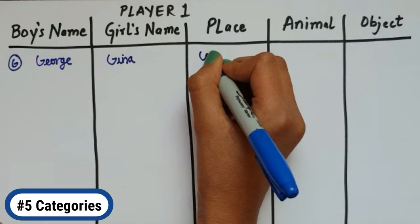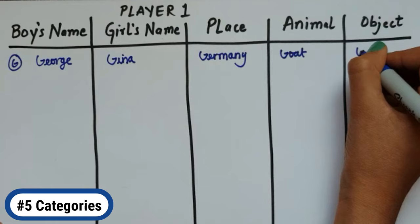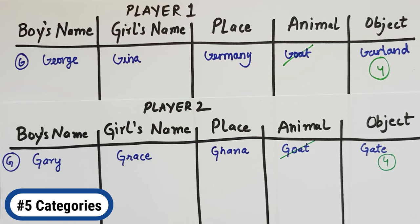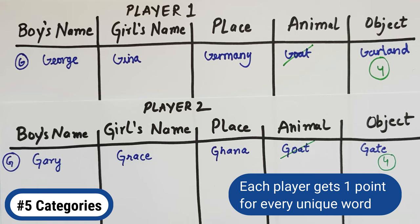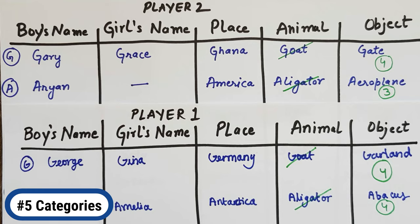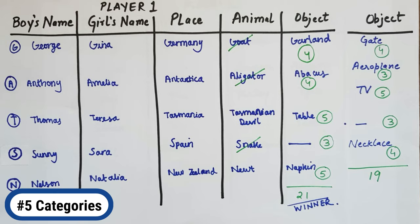Players take turns to pick letters for each round. You can set a time limit for each round. Each player gets one point for every unique word they write in each category. Both players get four points in round one as they wrote a common animal name. In round two, player two scored three points as one category was not filled. At the end of the game, the player with the most points wins.